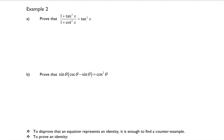Example 2a wants us to prove that 1 plus tangent squared x divided by 1 plus cotangent squared x is equal to tangent squared x. There's not much we can do with the right-hand side of this equation, so let's start with the left-hand side and rewrite what it says.